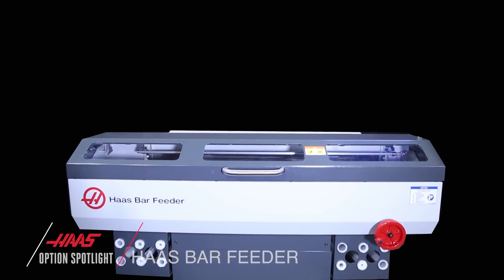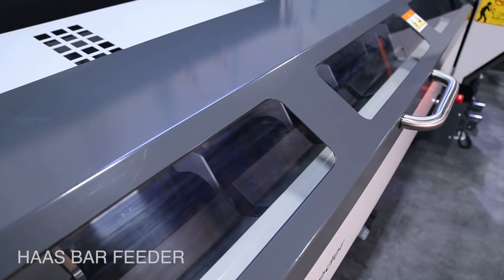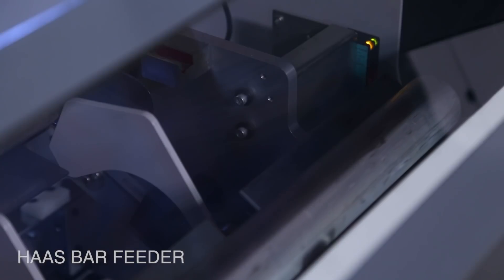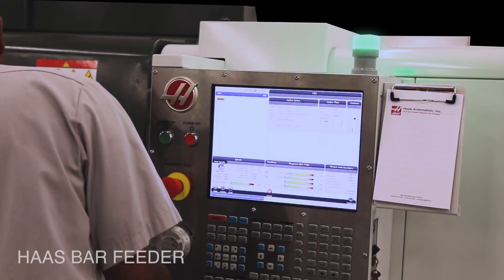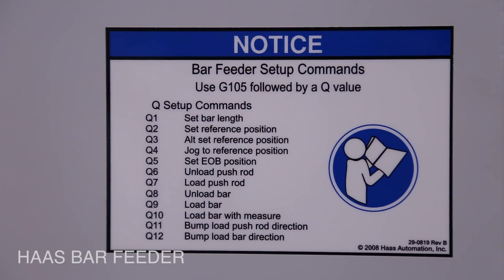The Haas bar feeder sets your machine operator free from loading and unloading their machine all day long. With the bar feeder, your lathe can run unattended for hours while your operator gets other jobs done.